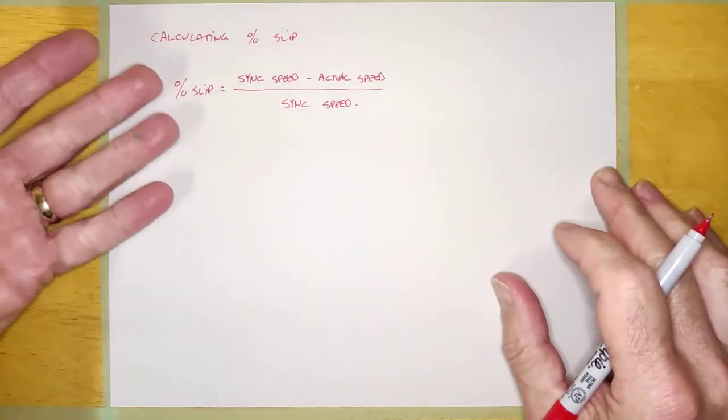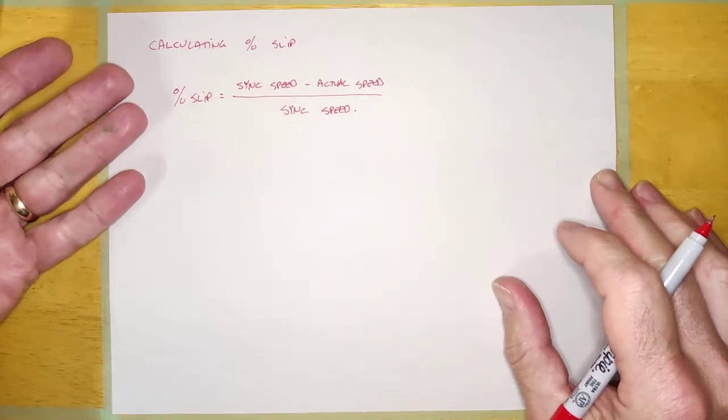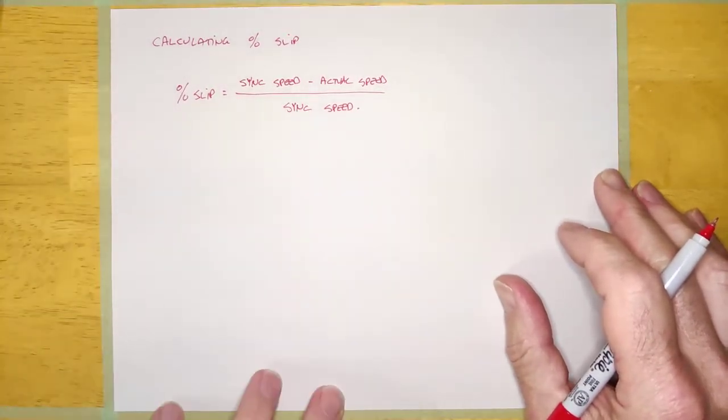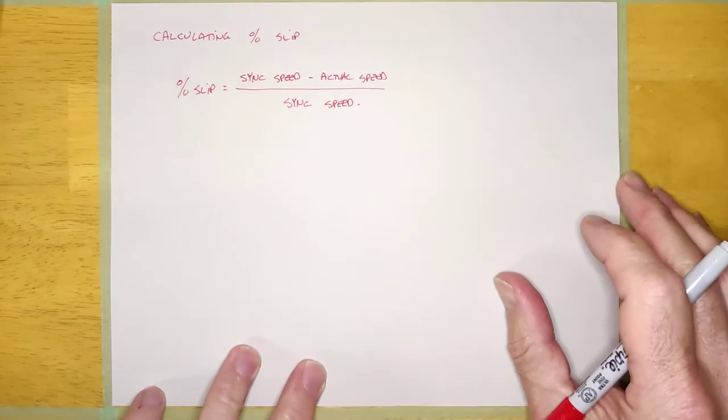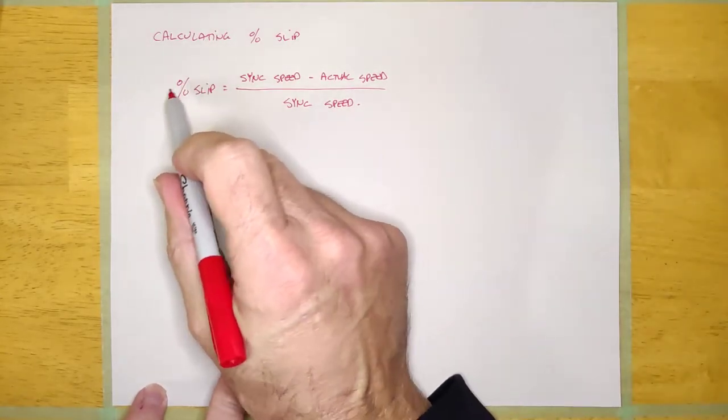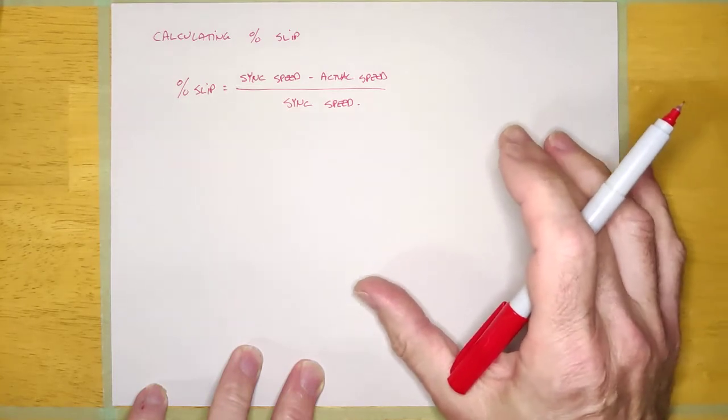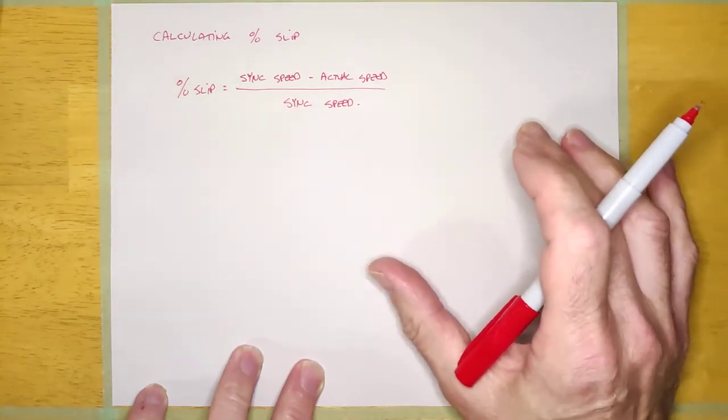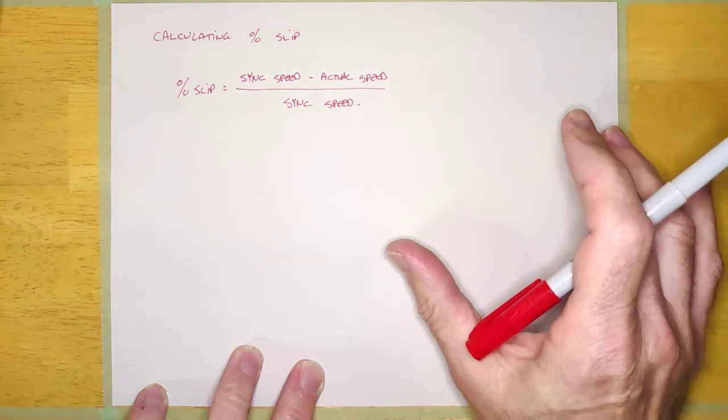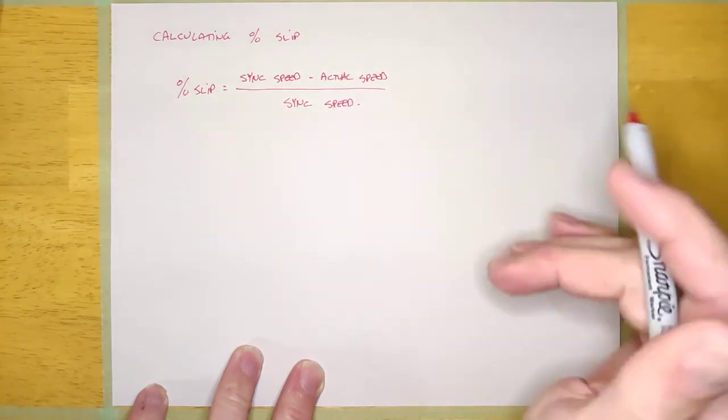And you know, this is another one of those formulas that you're never going to have to actually apply in real life. I guarantee it, but you're going to do it in school anyway. And when we refer to percent slip of an AC motor, we're talking about how much of its sync speed is it actually slipping. It's a little bit hard to explain, so I'm just going to actually do it.